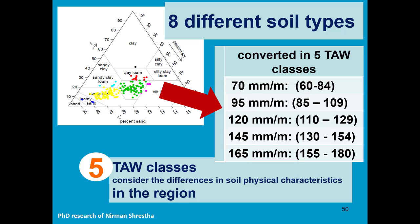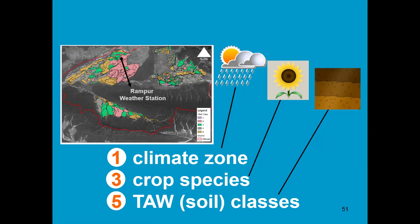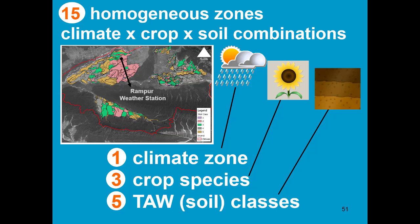The tau classes account for the difference in soil physical characteristics in the region. To conclude, we have 1 climate zone, 3 crop species, and 5 tau classes. This gives us 15 homogeneous zones.